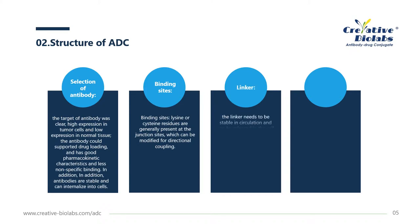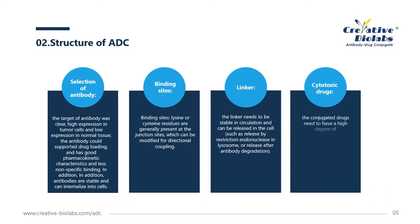For the linker, it needs to be stable in circulation and can be released in the cell, such as by restriction endonuclease in the lysosome, or released after antibody degradation. For cytotoxic drugs, the conjugated drugs need to have a high degree of pharmacodynamics, no immunogenicity, and can bind to the linker through modification, with a clear mechanism of action.